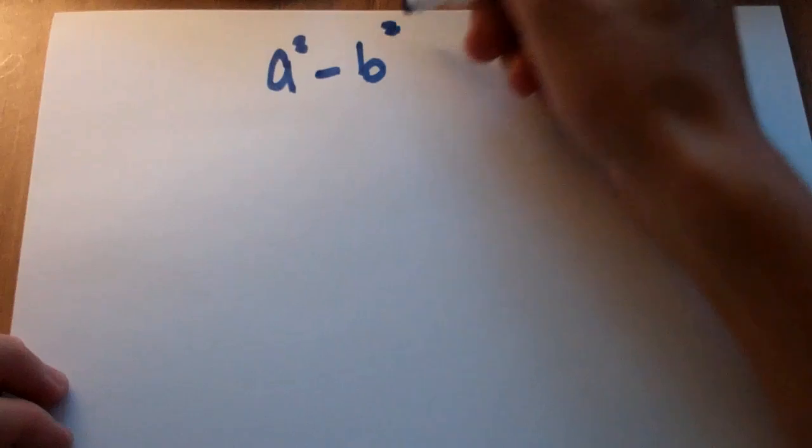But basically what it says is, if you have a polynomial, let's say you have something like this. You have a squared minus b squared.